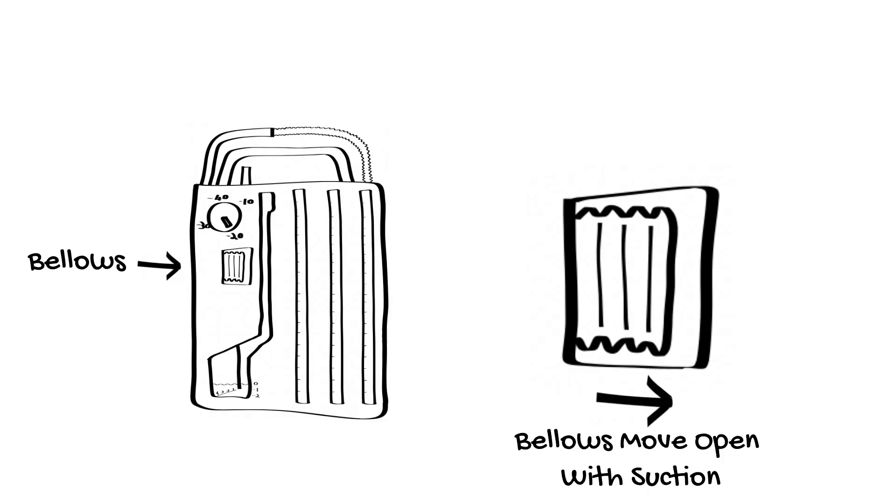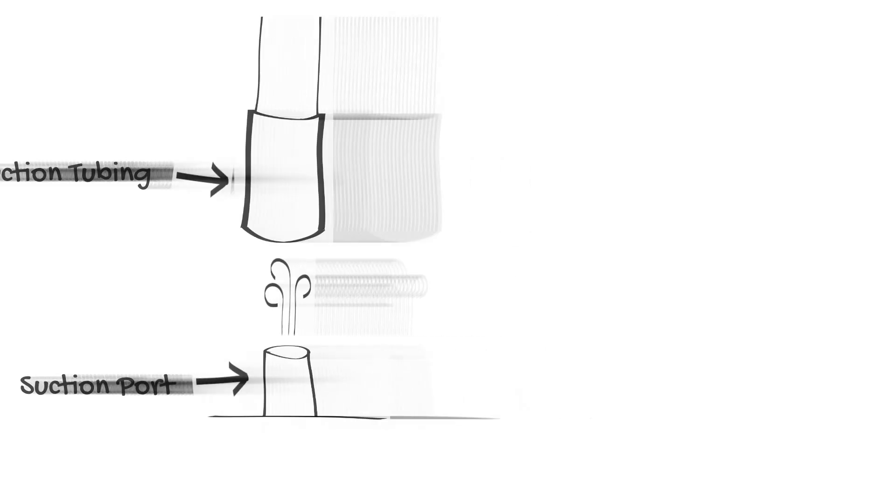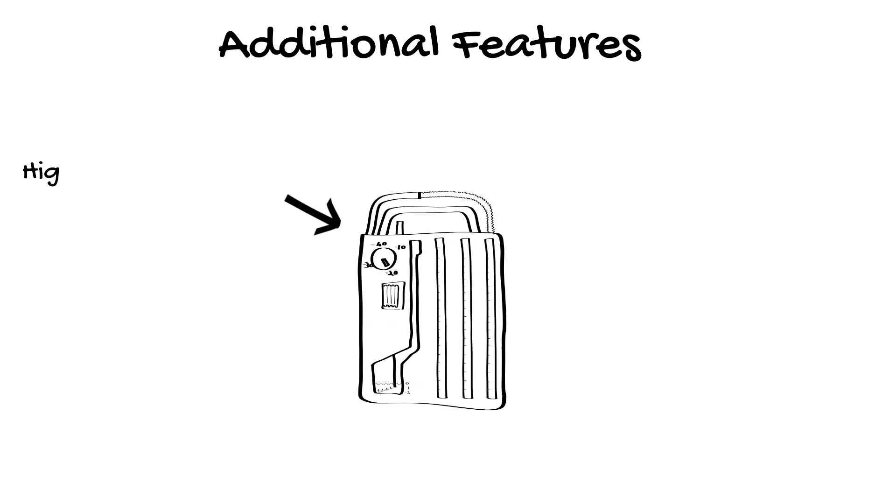Whilst a dry suction chamber is safer, the chest drain system still needs to stay upright due to the fluid in the underwater seal chamber. If the suction is turned off, the suction tubing should be removed from the chest drain system. Otherwise, the system is closed and won't allow drainage of air from the pleural space. Additional features of a modern chest drain system include a high positive pressure release valve in case of tension pneumothorax and a manual negative pressure vent when changing from a high level of suction to a lower level of suction.